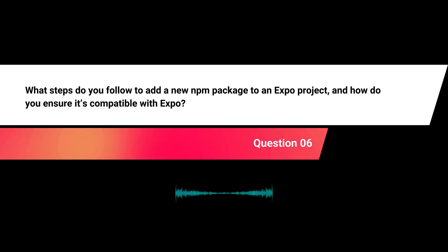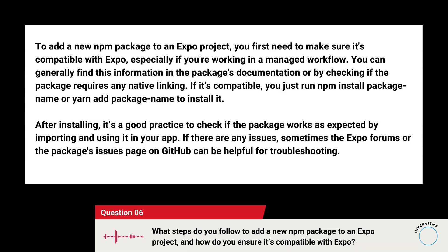What steps do you follow to add a new NPM package to an Expo project, and how do you ensure it's compatible with Expo? To add a new NPM package, you first need to make sure it's compatible with Expo, especially in a managed workflow. You can find this information in the package's documentation or by checking if the package requires any native linking. If it's compatible, run npm install package-name or yarn add package-name. After installing, check if it works as expected by importing and using it. If there are issues, the Expo forums or the package's GitHub issues page can be helpful for troubleshooting.